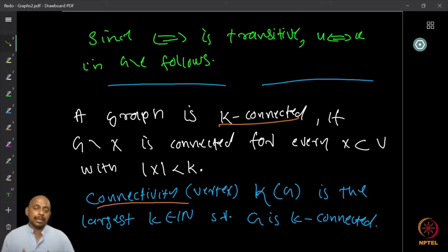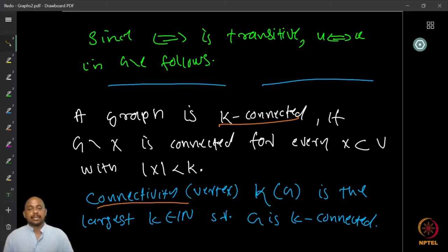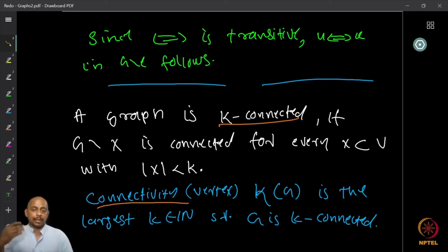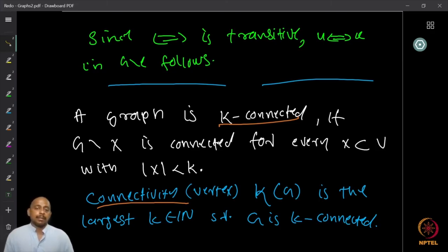The vertex connectivity of a graph, denoted κ(G), is the largest K such that G is K-connected. So if κ(G) = κ, then taking κ+1, there is a subset of vertices whose removal disconnects the graph. Therefore, the connectivity is the largest K such that G minus that vertex subset is connected.